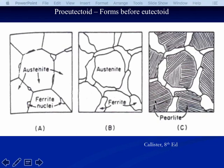Pro-eutectoid is the new key term here. We have ferrite that nucleated at grain boundaries and grew along them before the eutectoid temperature was crossed. In the pearlite itself, there is also ferrite between the cementite lamellae, formed as carbon diffused into cementite-rich regions and left behind carbon-poor ferrite. The ferrite on the grain boundaries is called pro-eutectoid ferrite — it formed before the eutectoid. The ferrite within the grains is called eutectoid ferrite — it formed at the eutectoid temperature.